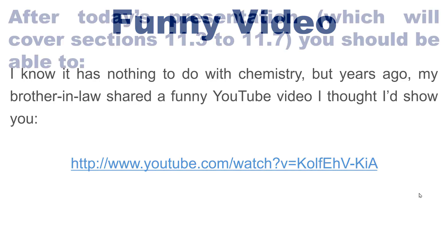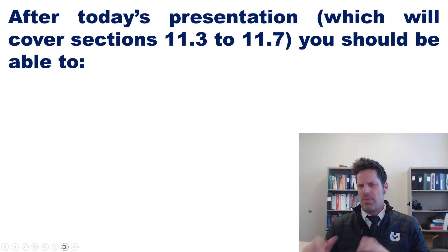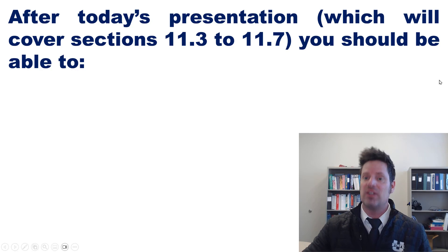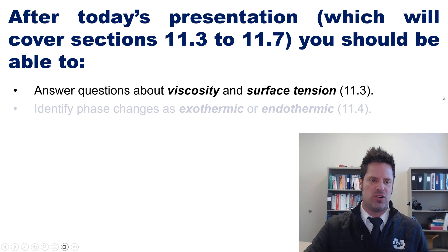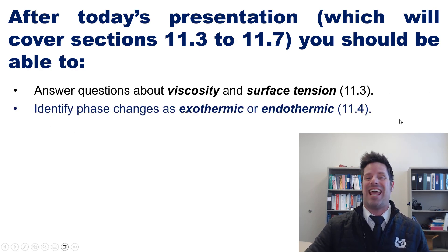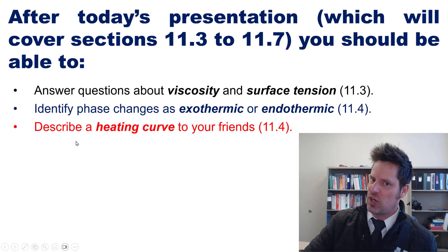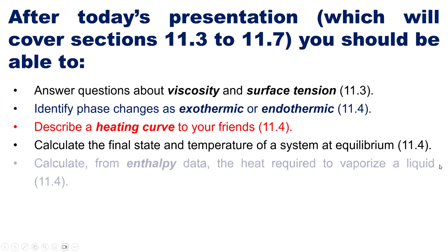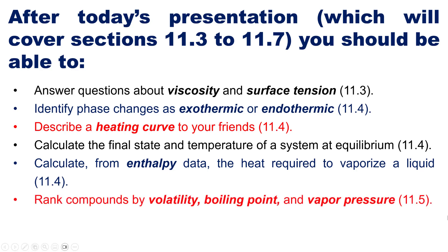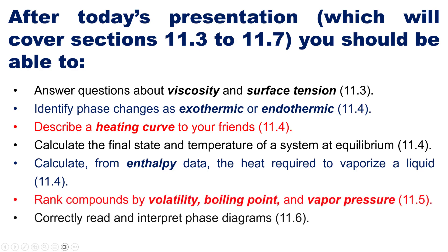After this presentation, as well as some that might follow covering sections three through seven of Chapter 11, you will gain the following skills: you will be able to answer questions about viscosity and surface tension, identify phase changes as exothermic or endothermic, describe a heating curve to your friends, and calculate the final state and temperature of a system at equilibrium. You will also learn how to calculate from enthalpy data the heat required to vaporize a liquid, rank compounds by volatility, boiling point, and vapor pressure, correctly read and interpret phase diagrams, and appreciate how cool liquid crystals really are — in a colloquial sense, not referring to their actual temperature.